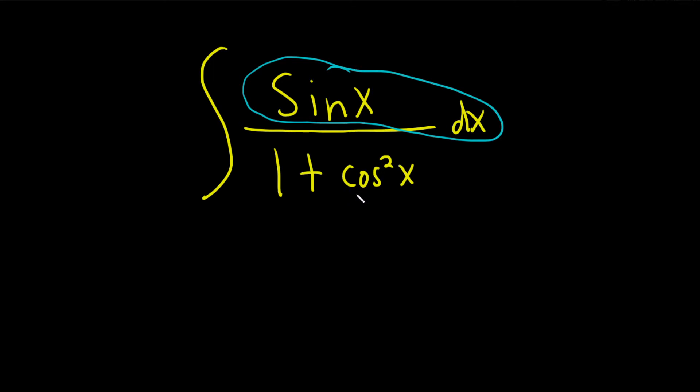So letting u be the entire bottom piece is probably not a good strategy. But if we let u be cosine, then the derivative of that is negative sine. And so we have a sine up top, so that seems to appear to be a better strategy. Even if you don't see how to do the rest of the problem, it's a better strategy than letting u be the entire bottom piece.